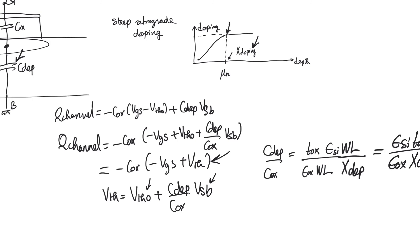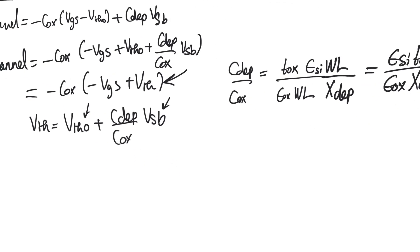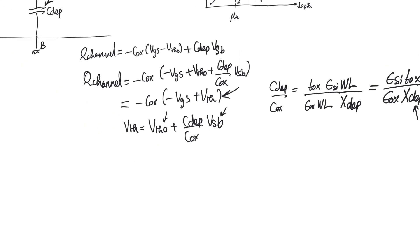So the depth of the depletion region does not saturate based on a complicated number of factors, as is the case with long channel transistors. It saturates at the depth of light doping. And so X-depletion can be replaced with X-doping.